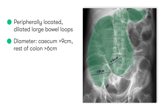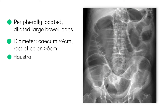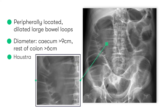We can tell that these dilated loops are large bowel rather than small bowel due to the presence of haustra. Haustra are saccular folds of mucosa within the large bowel which give it its characteristic segmented or pouch-like appearance, and you can see the haustra highlighted here.